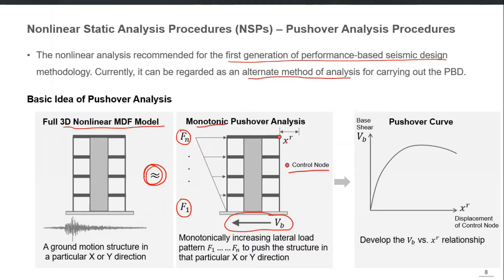The control displacement is the displacement of a control node, generally the roof point, so the roof displacement xr is recorded at every step. We keep pushing the building with increasing loading while maintaining the same pattern until the building is significantly damaged, as predicted by the computer model. At the end, we plot the curve between base shear on the y-axis and roof displacement on the x-axis. At very low levels, the behavior is almost linear.